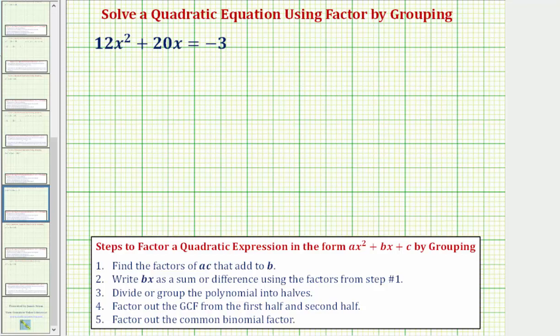Welcome to an example on how to solve a quadratic equation using the technique of factor by grouping. Our goal here is to solve the equation 12x squared plus 20x equals negative three.